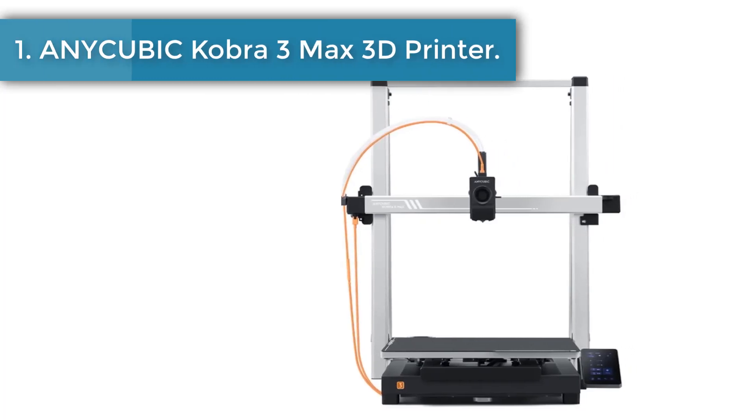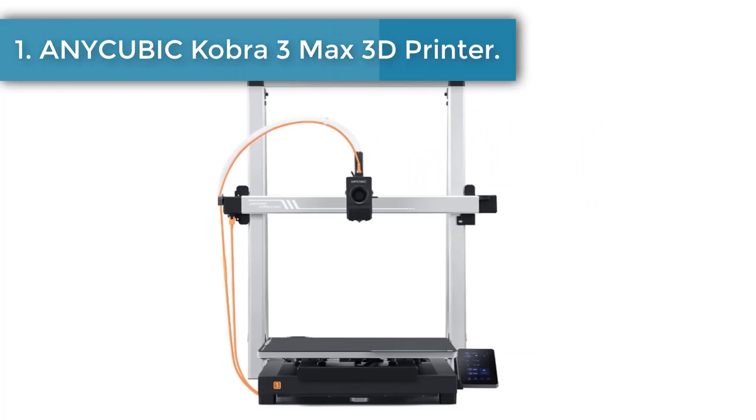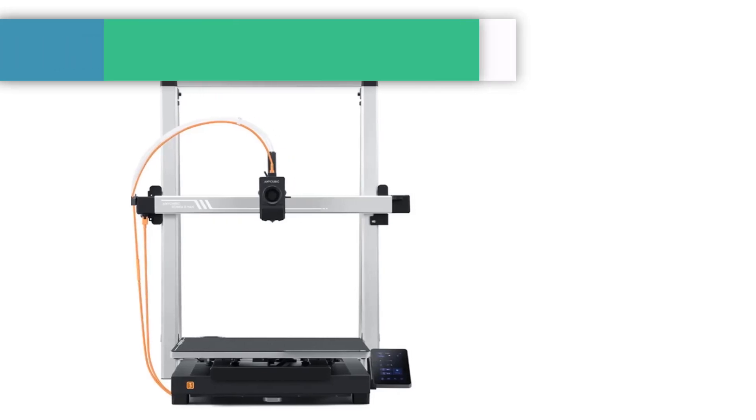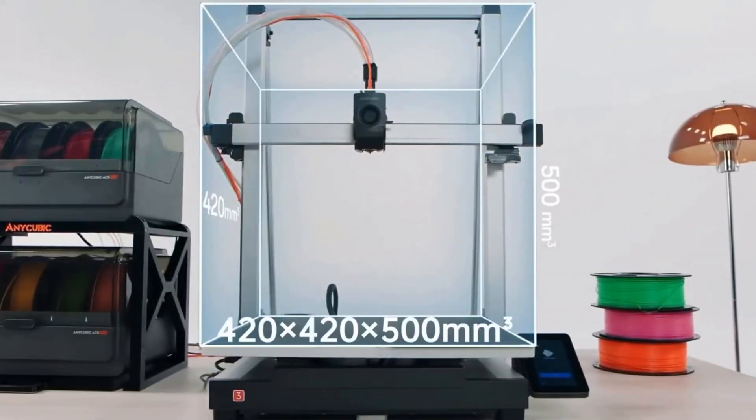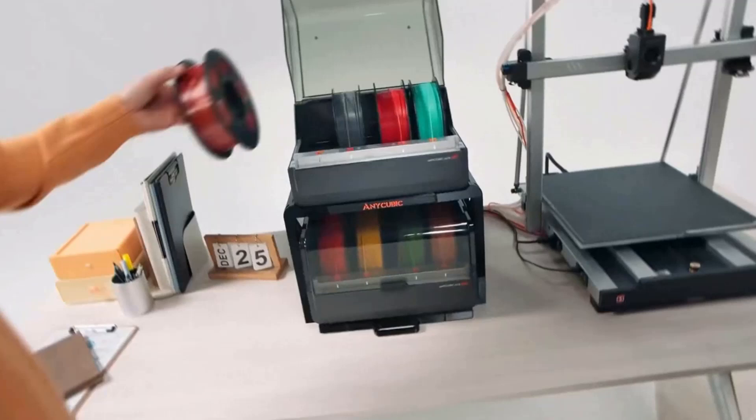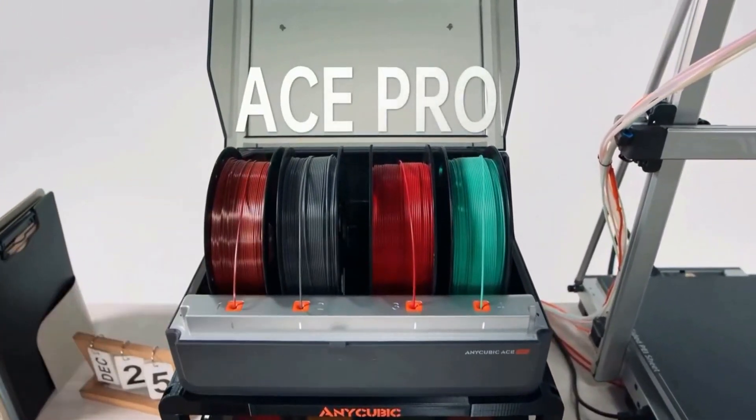Number one: Anycubic Cobra 3 Max 3D printer. The Anycubic Cobra 3 Max combo has an ultra-large print volume of 420mm x 420mm x 500mm, enabling effortless creation of full-scale models like helmets, castles, and oversized 3D printed reliefs in multiple colors with seamless printing that ensures the integrity of your creations.